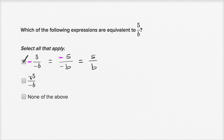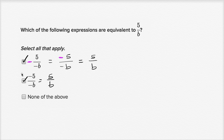The next option also has a negative divided by a negative, which is just going to be positive — the same thing as five over b. One way to think about it is that the negatives cancel each other out, giving us five over b. That one looks good too. And of course I won't select none of the above, because I found two choices that worked.